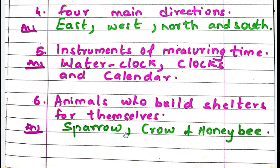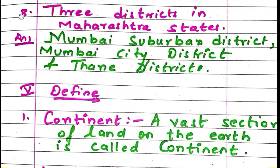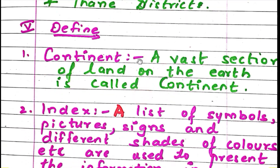Number six: animals that build shelters for themselves — answer: sparrow, crow and honeybee. Number seven: animals which run very fast — answer: cheetah and horse. Number eight: three districts in Maharashtra state — answer: Mumbai Suburban District, Mumbai City District and Thane District. These are also given on your map.